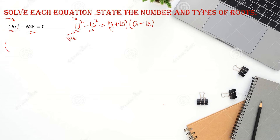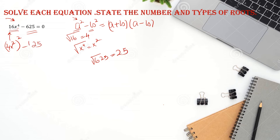The square root of 16 is 4, and the square root of x to the power 4 is x squared. So we can write it as (4x²)² minus (25)² equals 0. Now apply the formula a² - b² = (a + b)(a - b), where a is 4x² and b is 25.